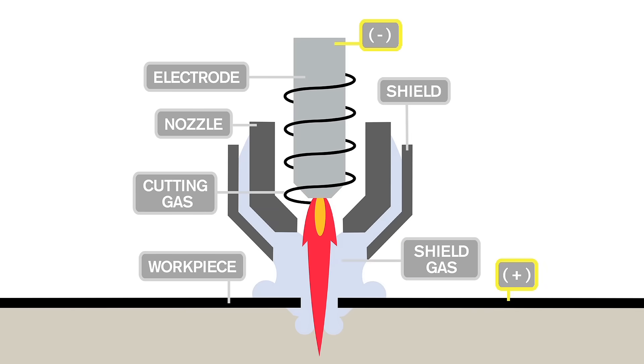Electricity supplies the energy needed to turn the gas into plasma. The greater the current, the hotter the plasma. A specially engineered nozzle and electrode constrict and maintain the plasma jet, concentrating it into a small area so it can be used for cutting.